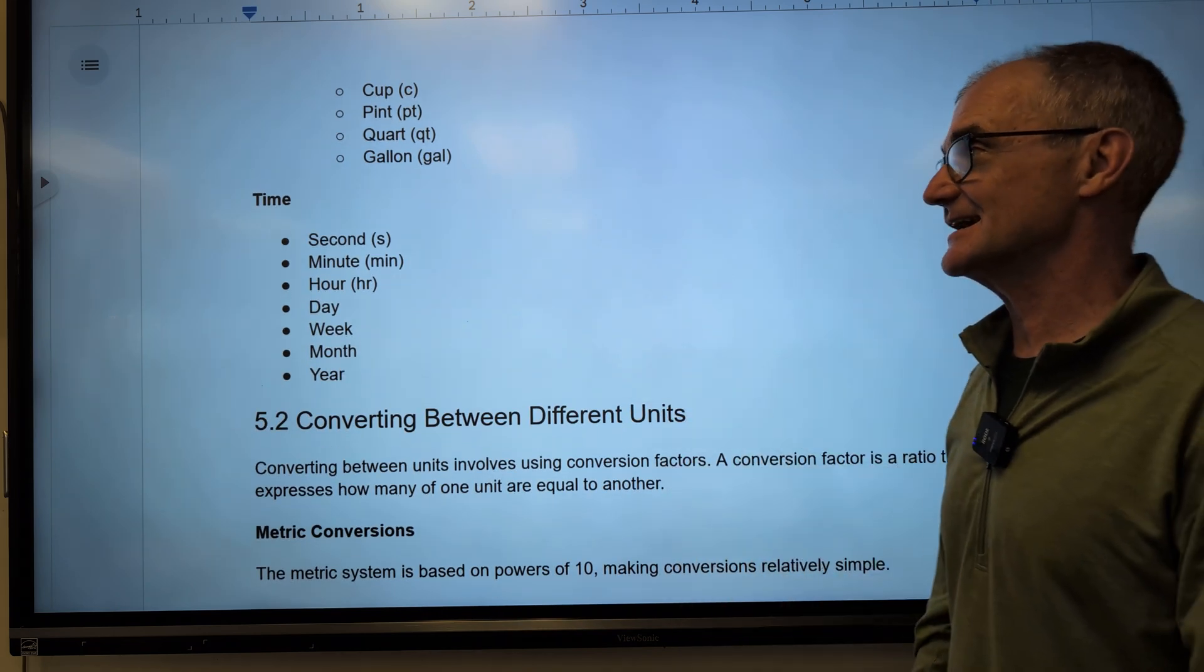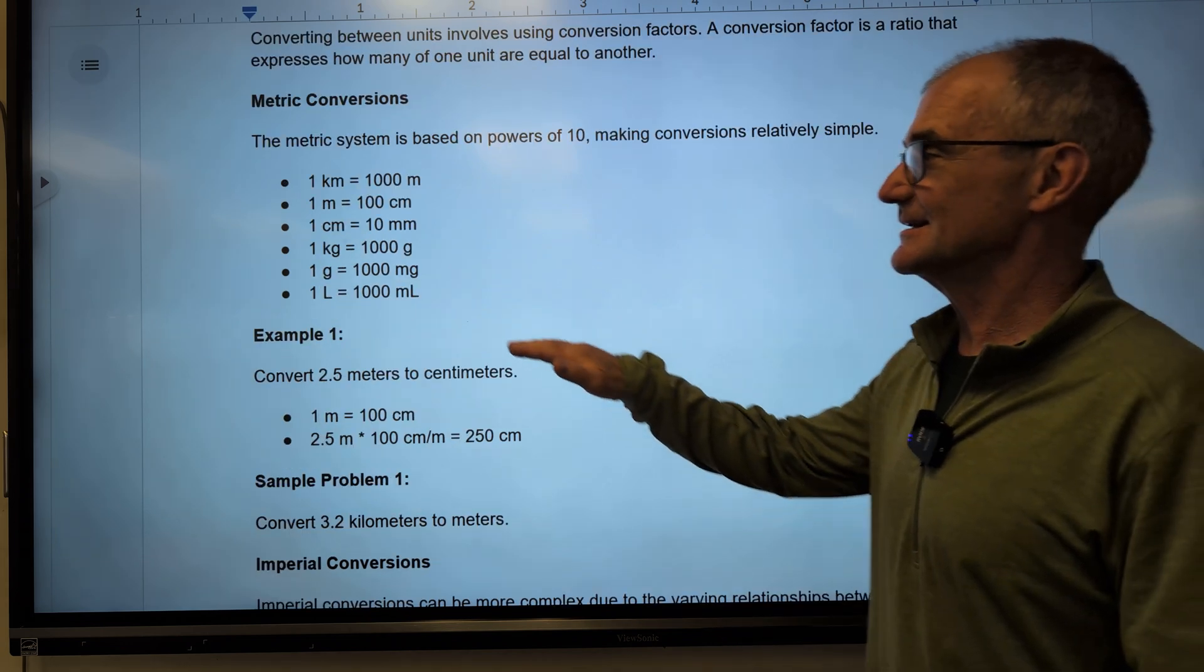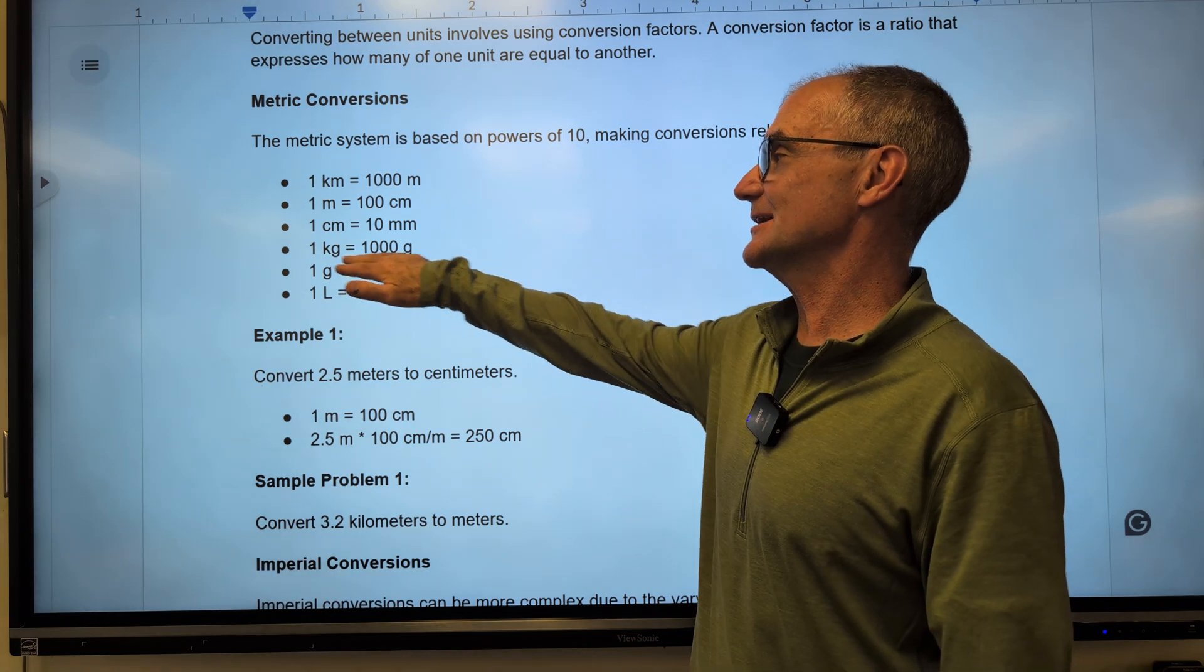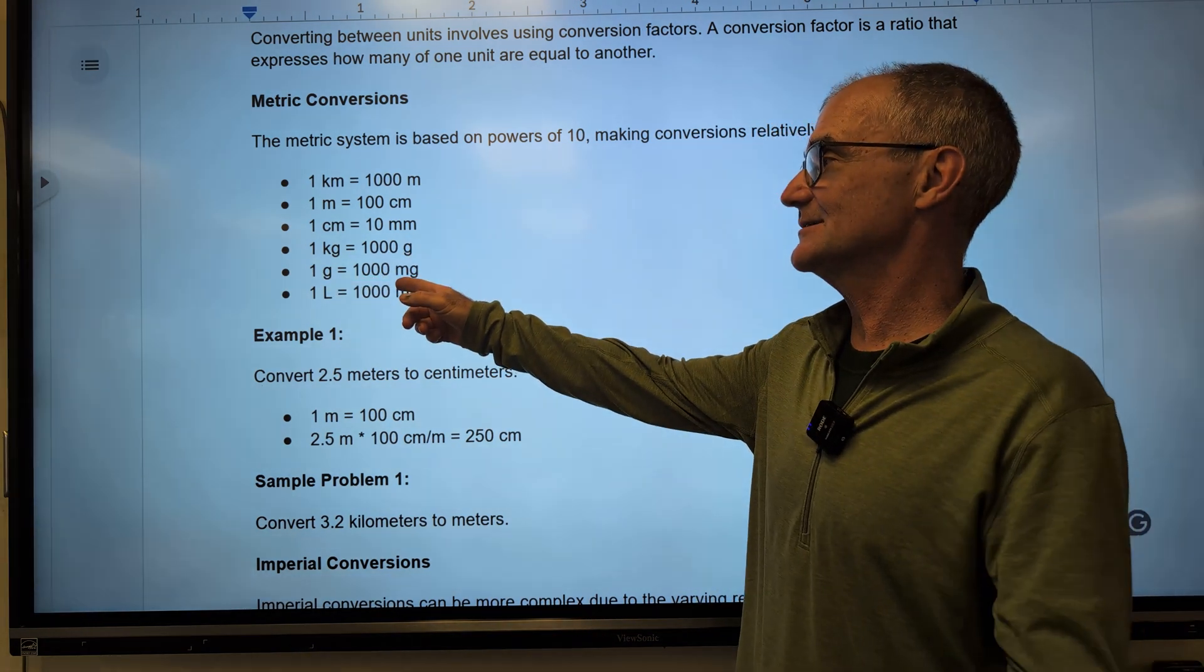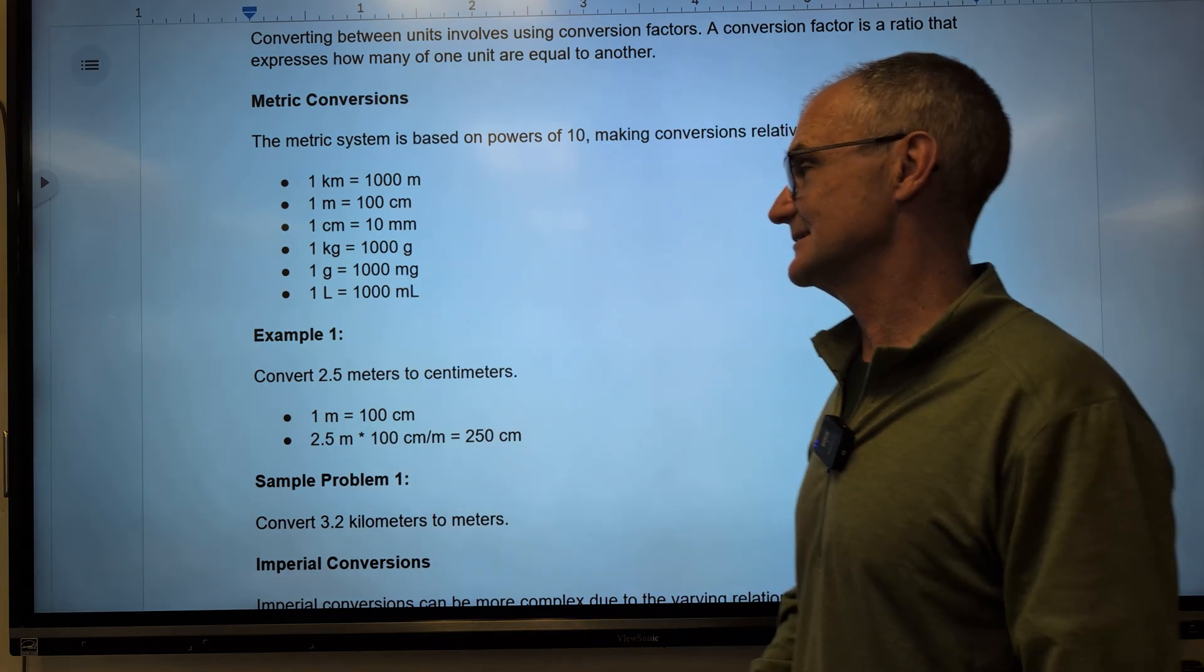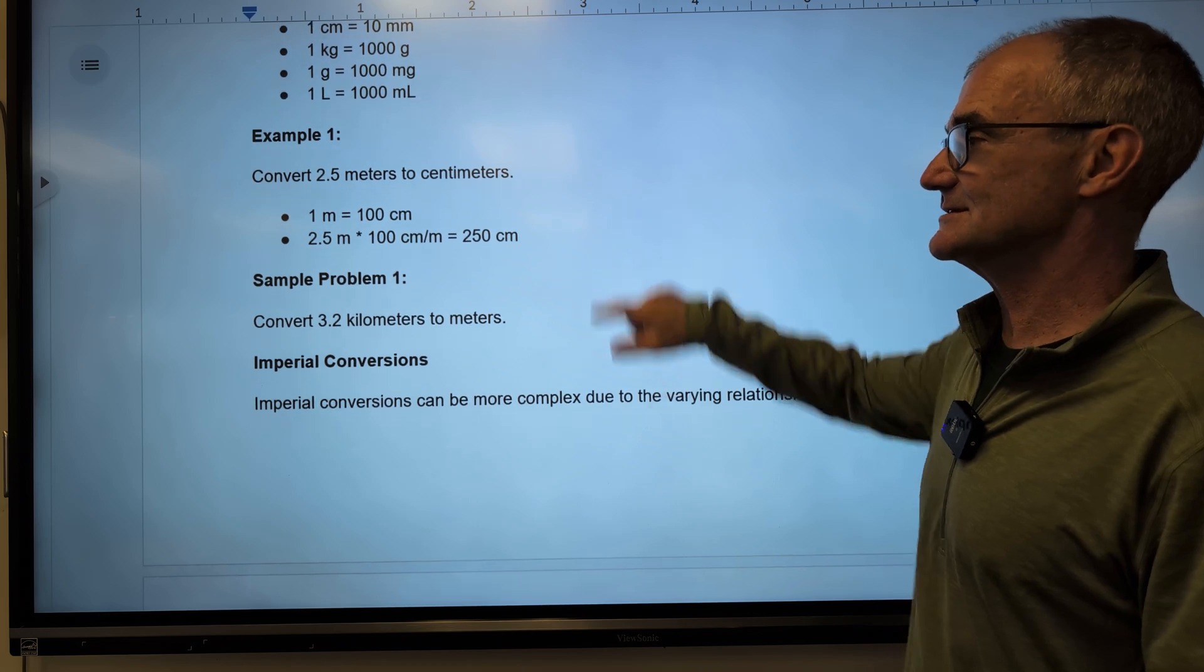Again, the kilogram, or the gram is the center unit. 1,000 grams equal 1 kilogram. This is how easy it is in the metric system. Either you're multiplying by 10 or dividing by 10. So let's do a few example problems in the metric system.